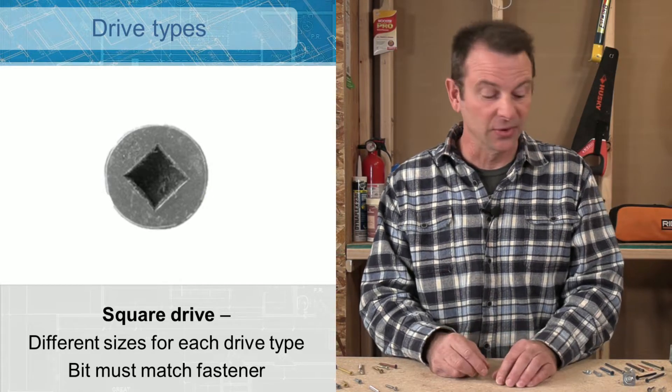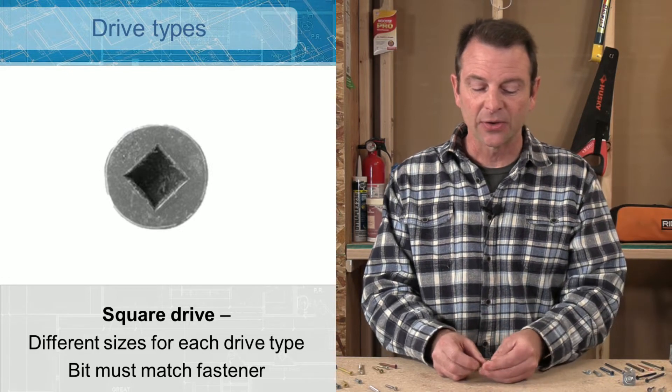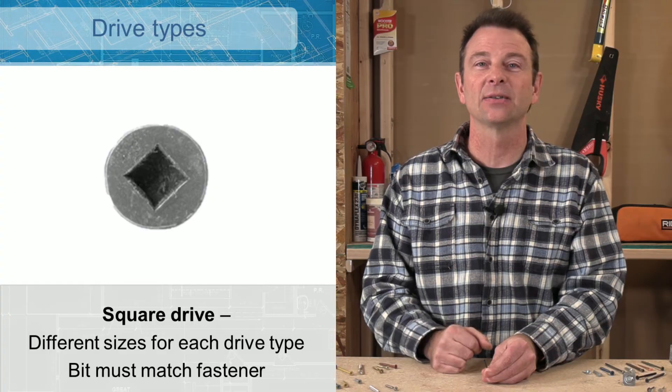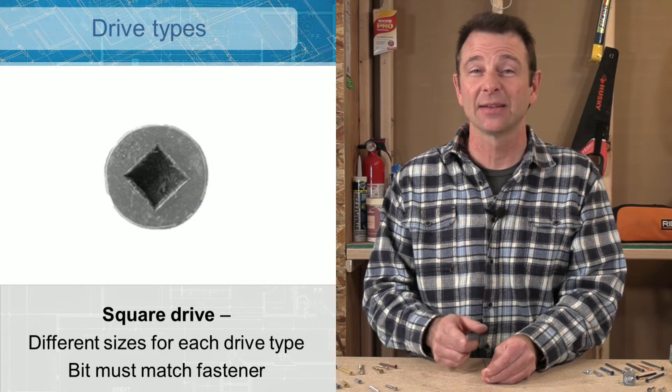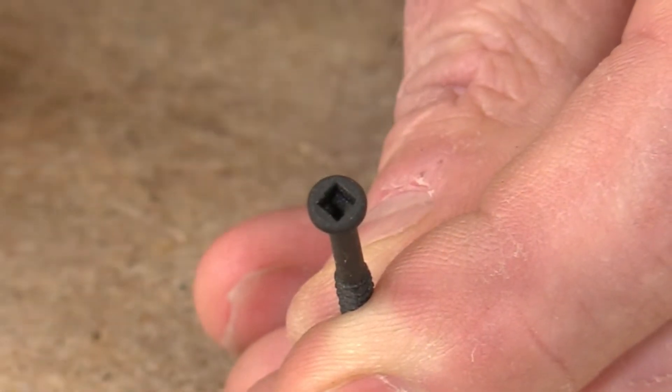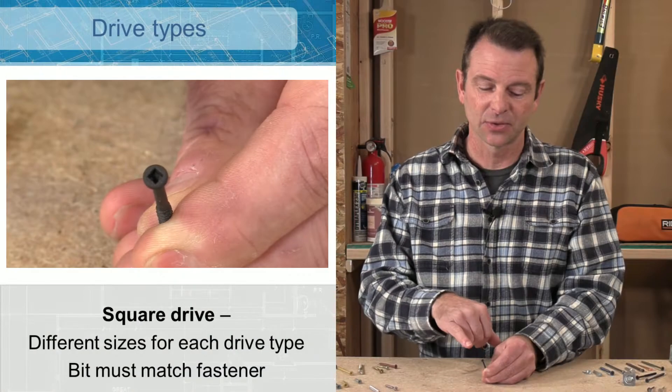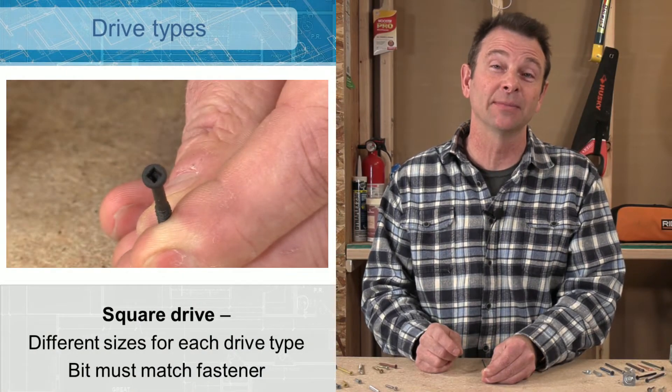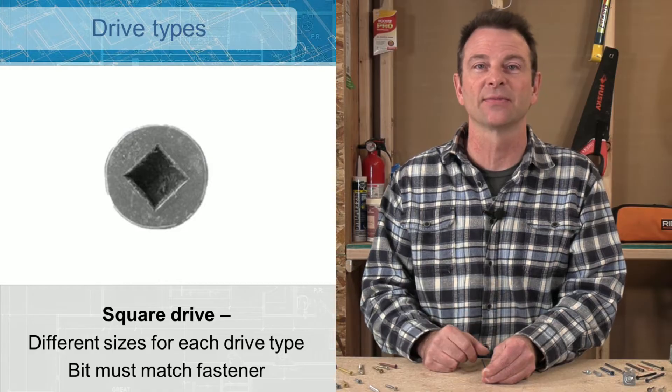You might see a square drive screw. And I have one here. This is a tiny little screw. A square drive is literally, as it sounds, a square that's stamped in there. It takes a matching bit. There's a few sizes of these as well. These are not the most forgiving type of screw heads. And you have to be very careful when you're driving them. They can strip out. But on a tiny screw like this, it works just fine.